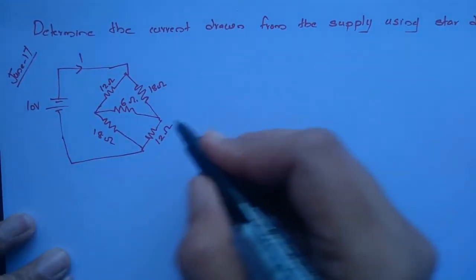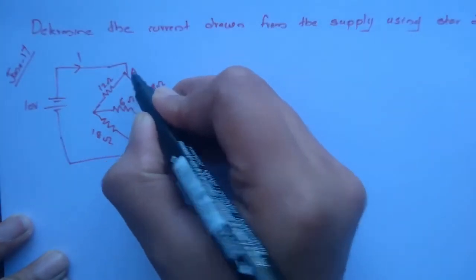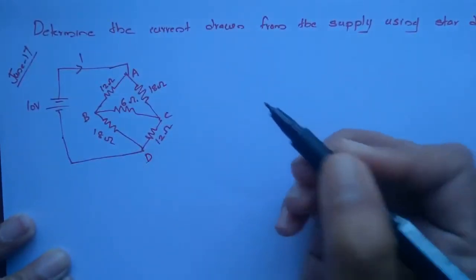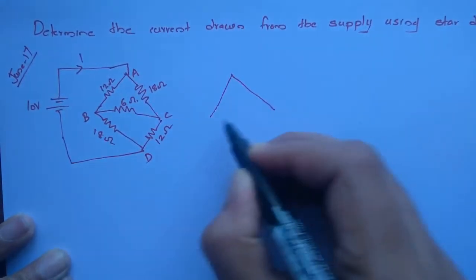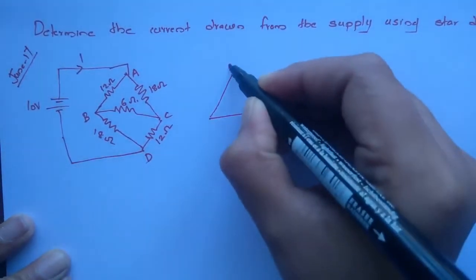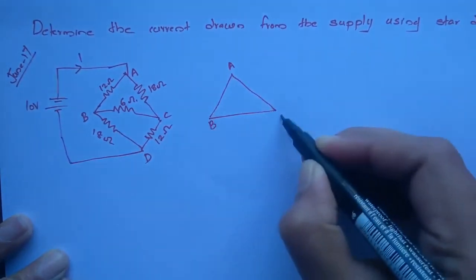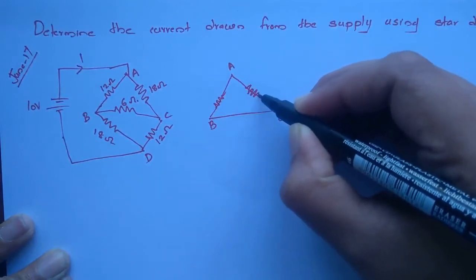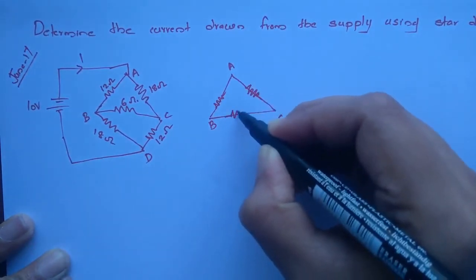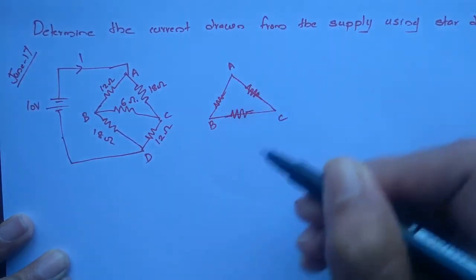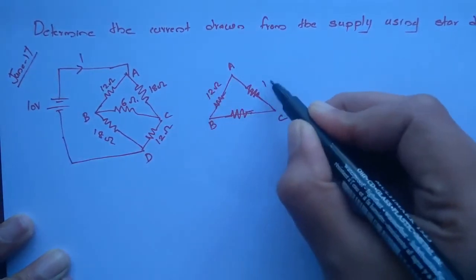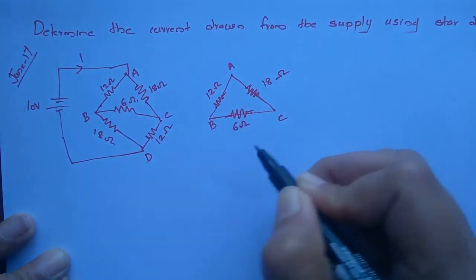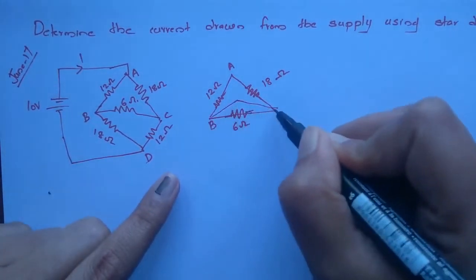So how will we calculate I? I am just giving names: A, B, C, D. What I am going to do is use star-delta transformation. I am drawing nodes A, B, C. Transforming this particular delta — there is a resistance here. So A, B, C: here it is 12 ohm, there it is 18 ohm, and here it is 6 ohm.